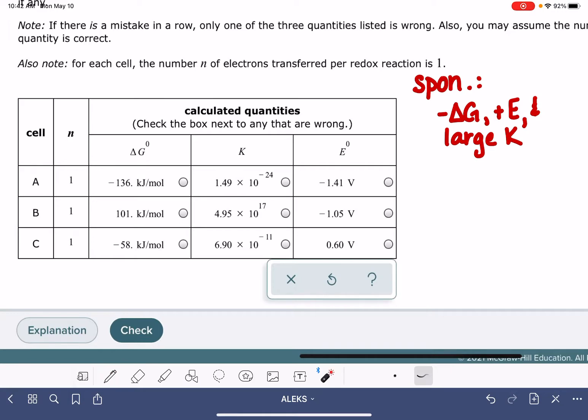And then for non-spontaneous reactions, the definition of non-spontaneous is to have a positive value of delta G. Non-spontaneous reactions don't generate electricity, so they're going to have a negative value of E. And then also they are going to have a small value of K. And again, to do that, we're looking at the exponents.